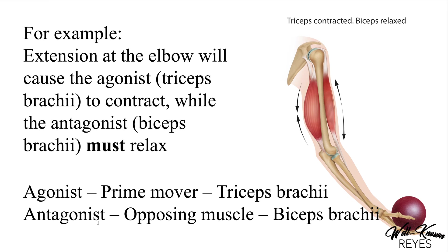So the agonist prime mover is the triceps brachii and the antagonist opposing muscle is the biceps brachii. There is something called reciprocal inhibition — the reciprocal muscle has to inhibit, meaning it relaxes while the other contracts. We will discuss that more in depth in another video.